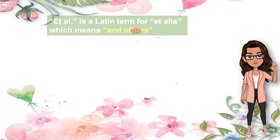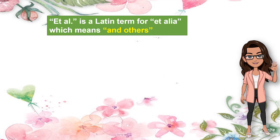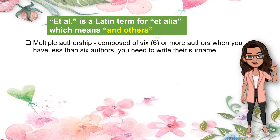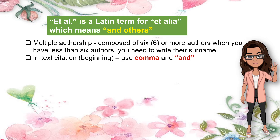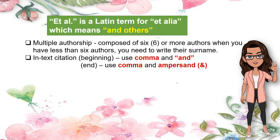Now, when do we use et al. in our citation? Et al. is a Latin term for et alia, which means and others. This is used when you have multiple authors. Multiple authorship is authorship composed of six or more authors. Thus, when you have less than six authors, you need to write their surname. If you use in-text citation at the beginning, connect their surnames with a comma and 'and.' However, if it is at the end of the statement, connect the authors' surnames with a comma and ampersand (&).